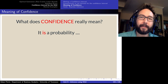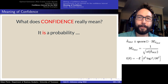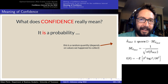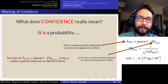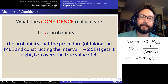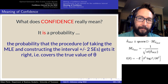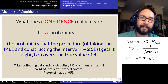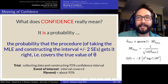Confidence is some sort of probability, but what does it refer to? If we think back to our master formula — take theta hat and go plus or minus two standard errors — theta hat is a random quantity depending on the sample values, and so is the standard error. That procedure of constructing the interval is the random quantity that confidence describes the probability of being correct. Confidence refers to the probability that our procedure of taking the MLE and going plus or minus two standard errors ends up producing a range of values that covers theta. Sometimes it does and sometimes it doesn't.